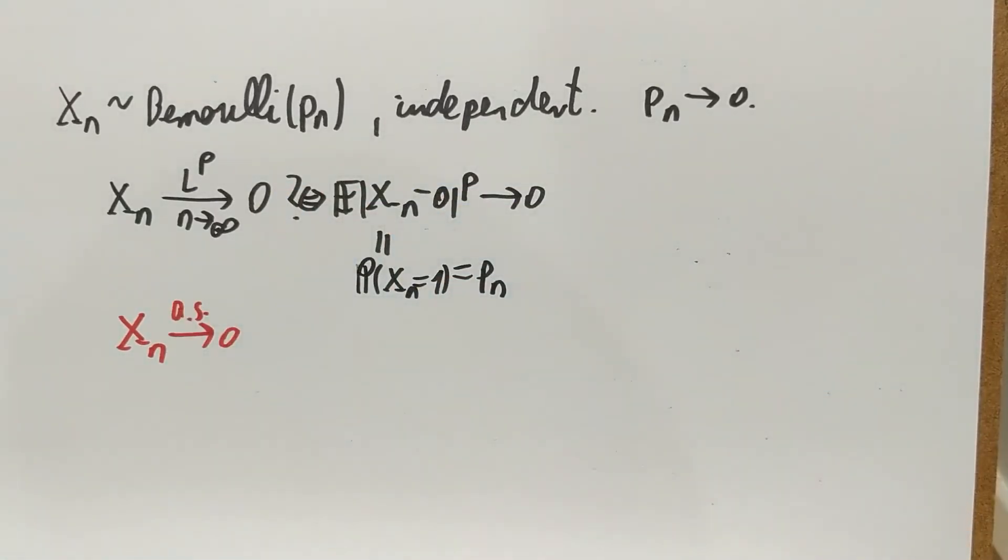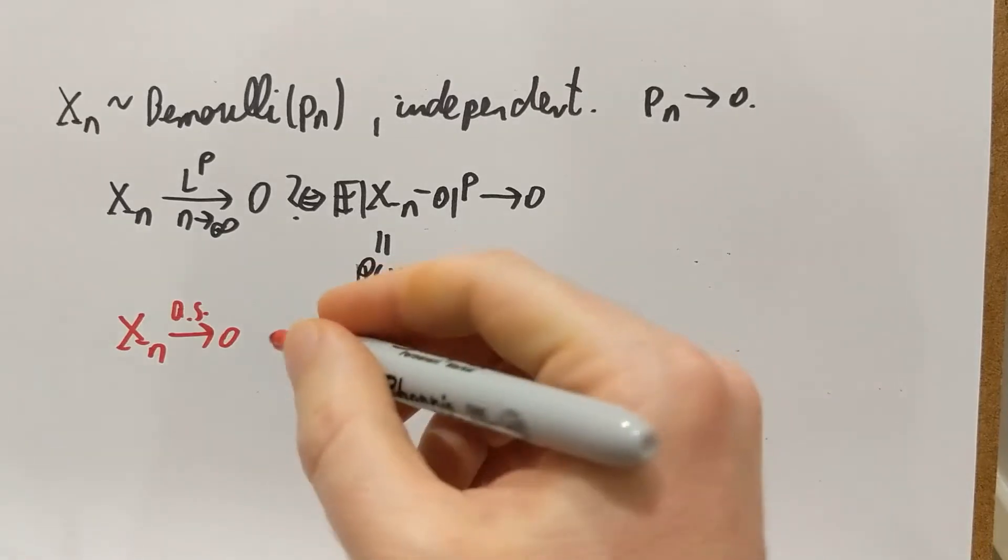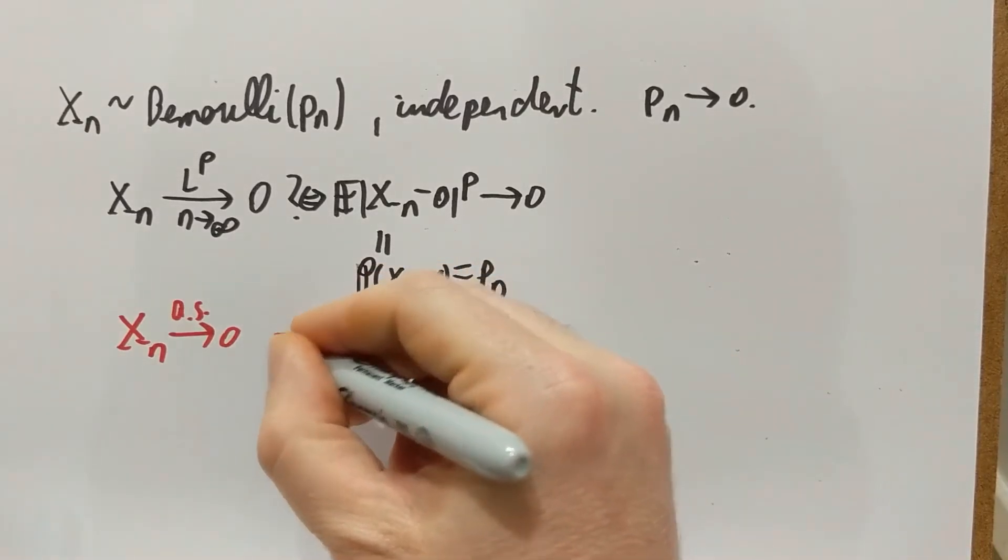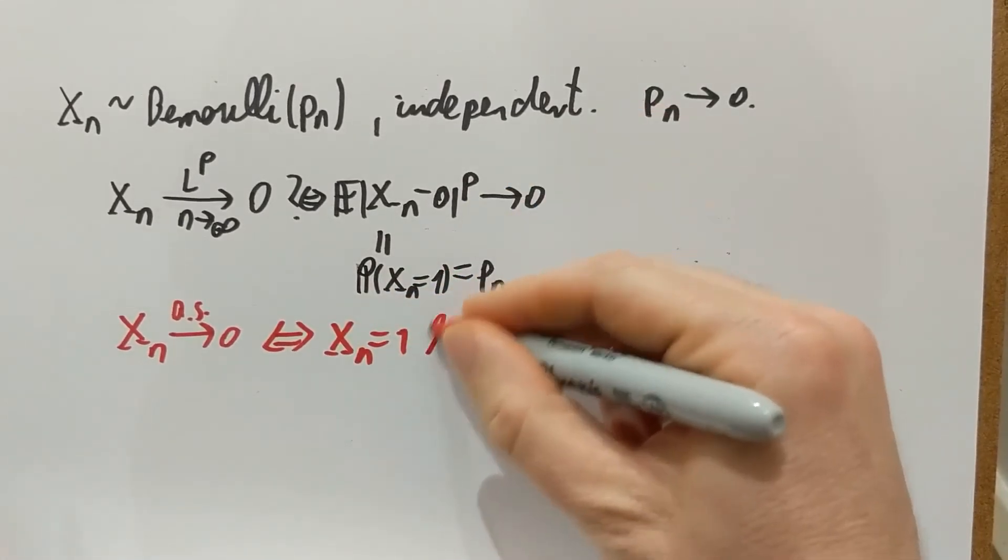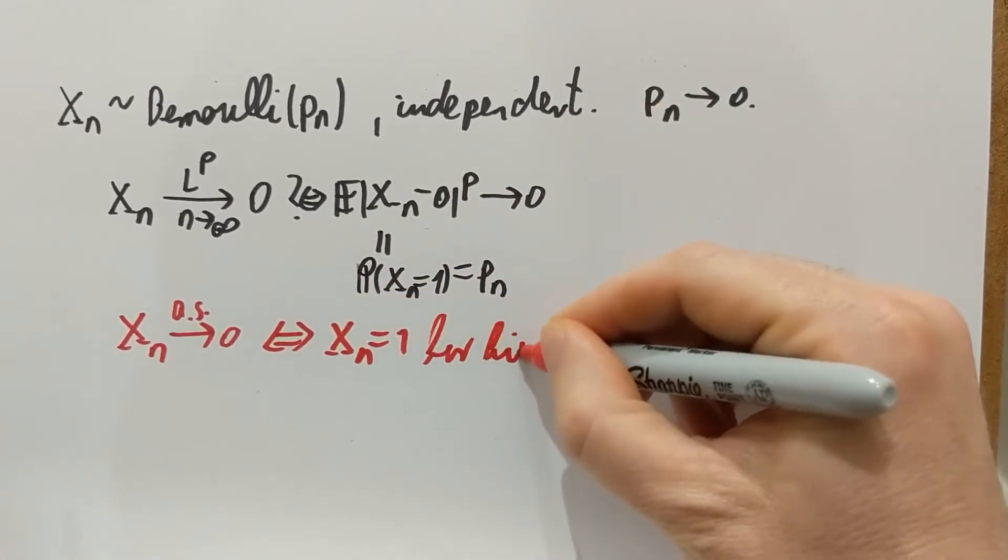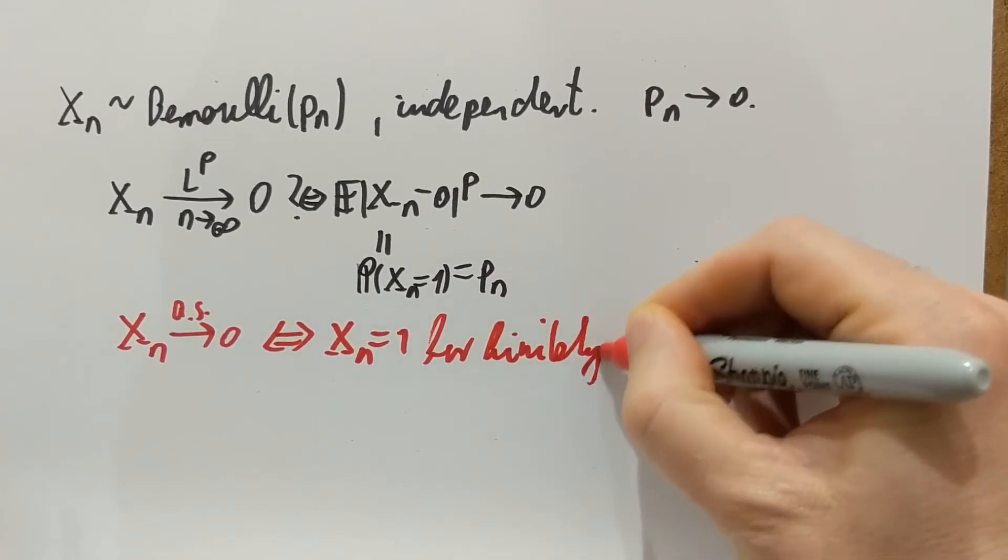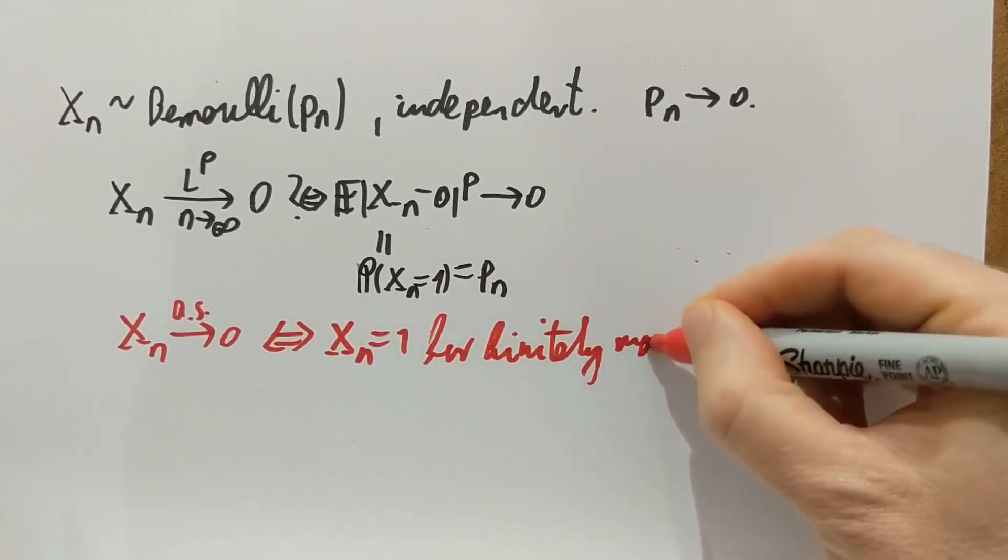What does it mean to have almost sure convergence for a zero-one sequence? The Xns can only be zero or one. What does it mean for a zero-one sequence to converge to zero? It means that it can only have finitely many elements equal to one in it. So that happens if and only if Xn equals one for finitely many n's.